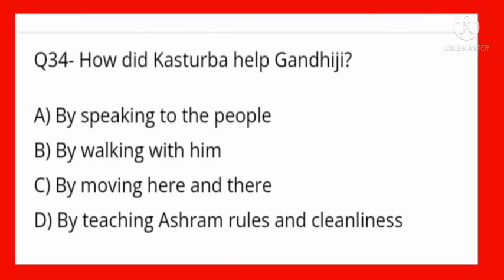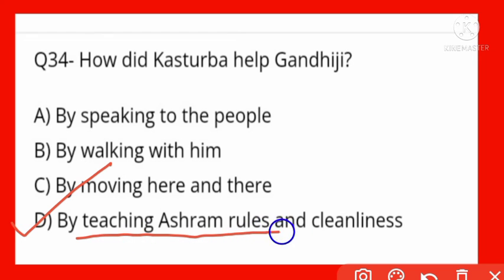How did Kasturba help Gandhi Ji? Options: by speaking to the people, by walking with them, by moving here and there, by teaching ashram rules and cleanliness. Option D is correct — by teaching ashram rules and cleanliness. In Gandhi Ji's absence, Kasturba was managing the ashram, teaching swachhata ke niyam ashram mein.